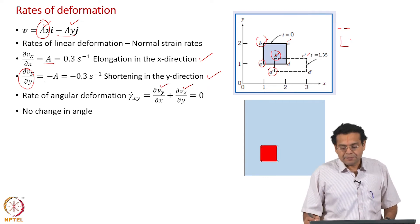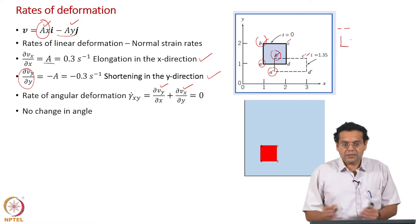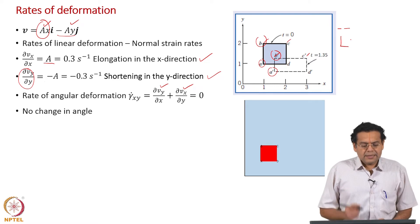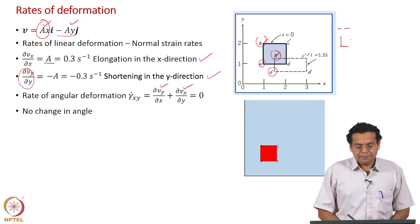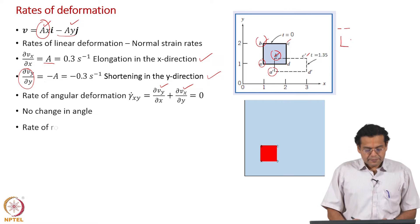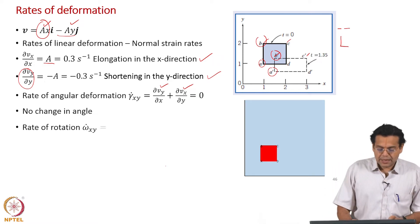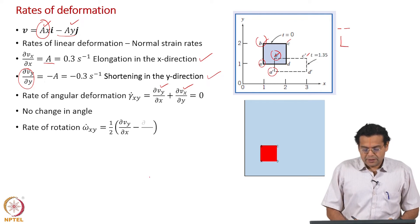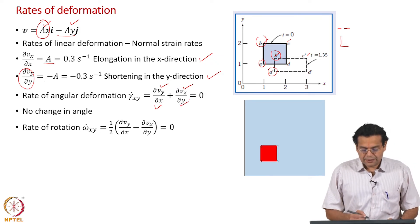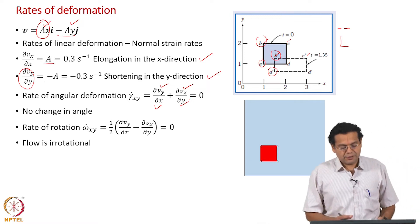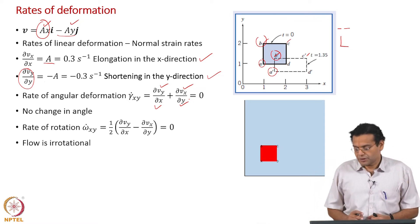The angle BAD is 90 degrees, and angle B'A'D' is also 90 degrees — there is no change in angle at all. In the earlier example we had angular deformation and rotation, but in this example angular deformation is 0 and rotation is also 0. The rate of rotation ω_xy is 0, because neither v_y depends on x nor v_x depends on y.